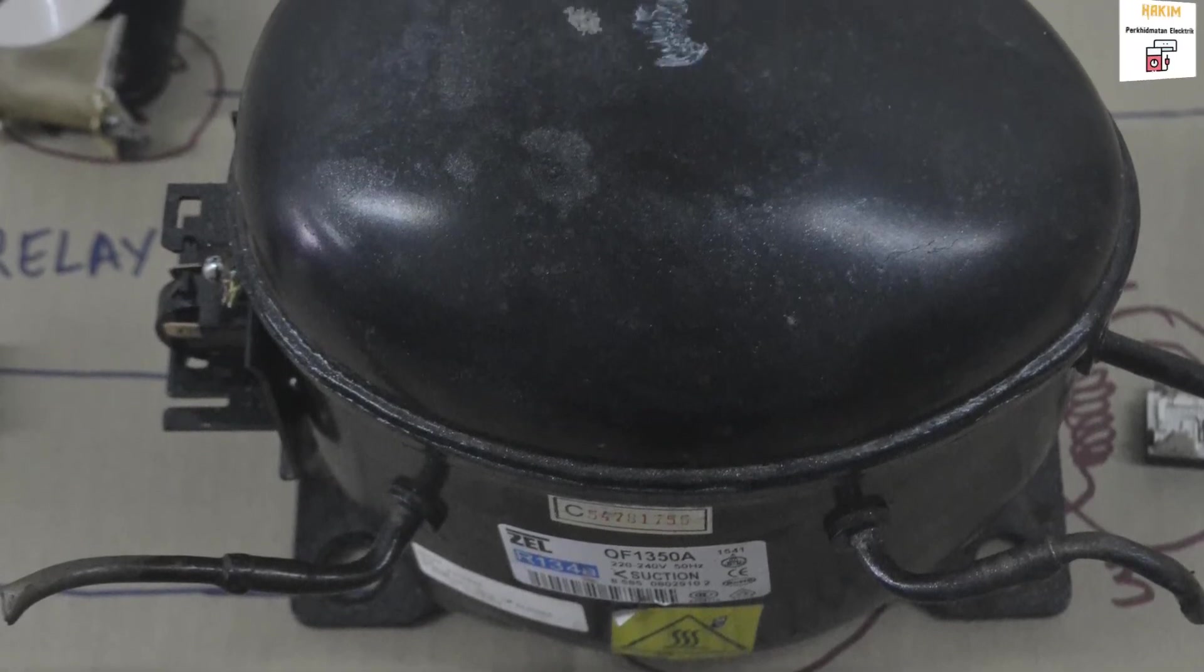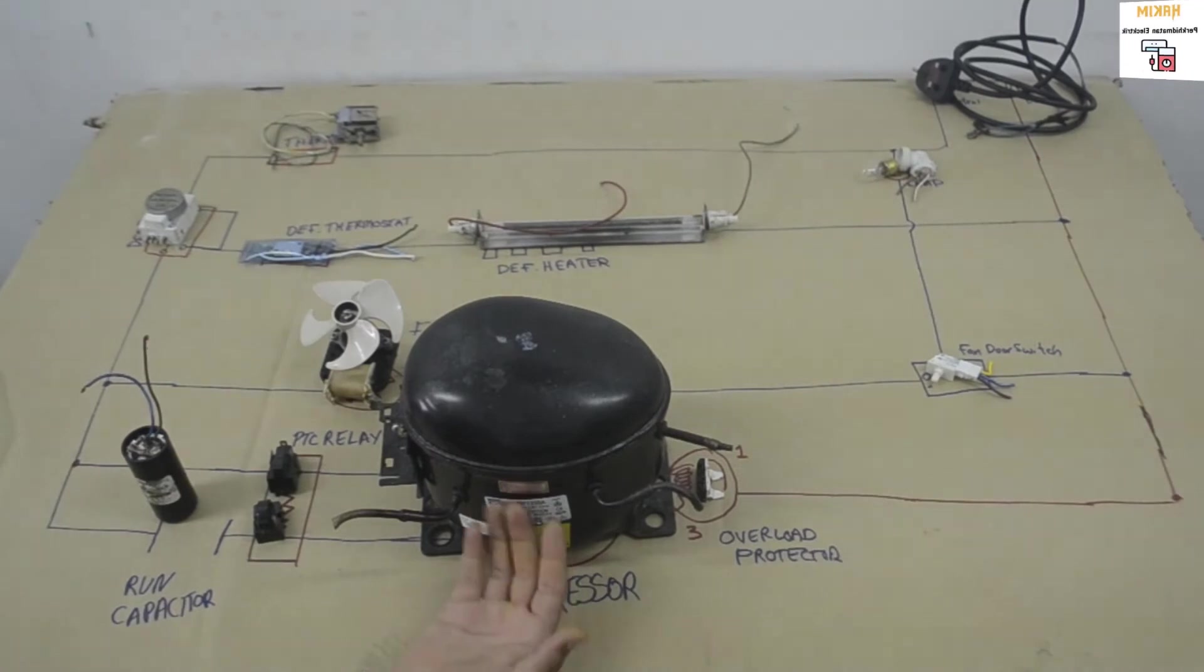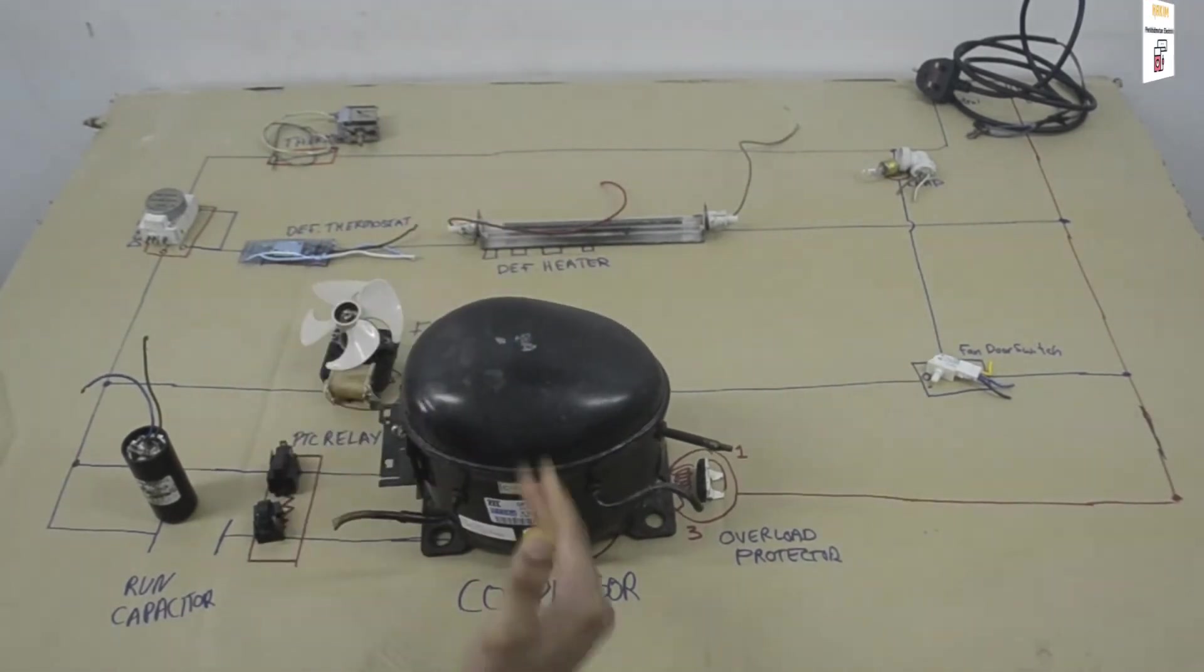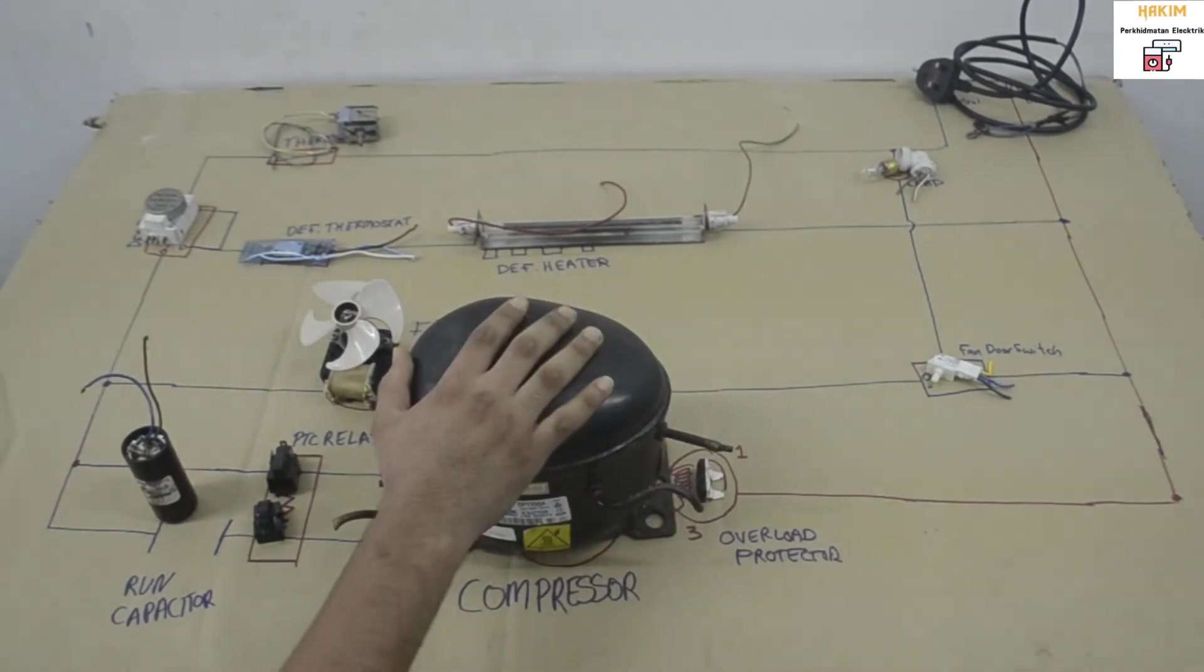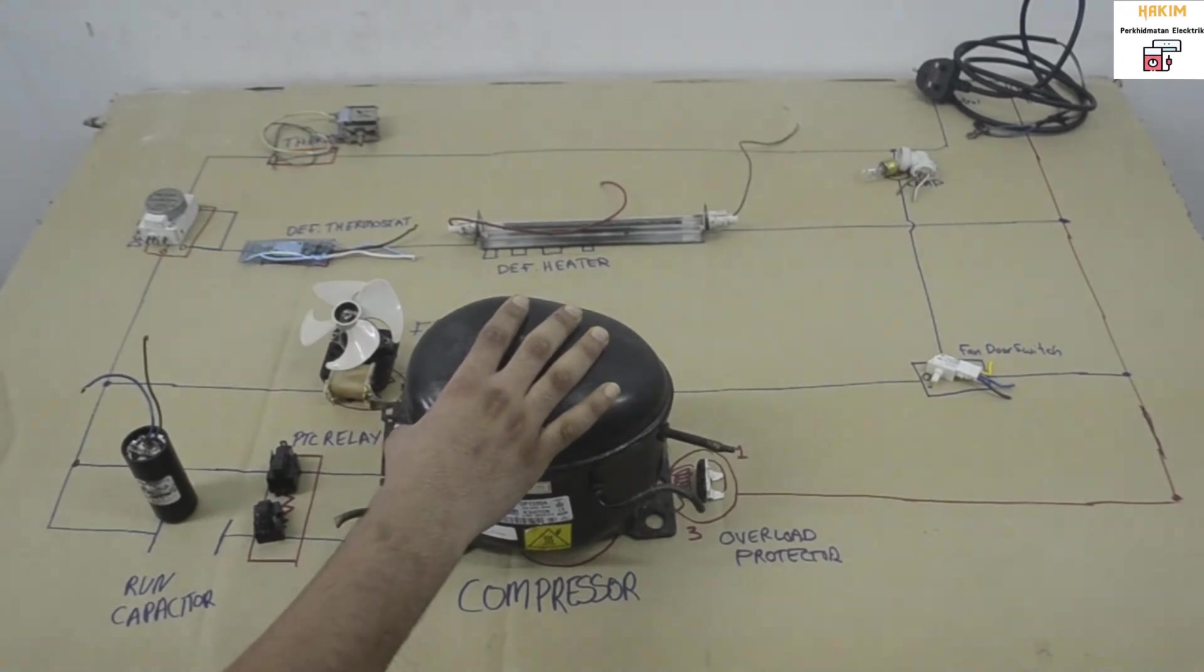Now the last and final thing: the compressor. The compressor is literally the main thing. What it does is it compresses gas freon. In this one we have R134A, but in some we have R22. There are many types. This is a basic compressor. There are inverter compressors and many types of compressors. There are compressors in aircon and refrigerators.